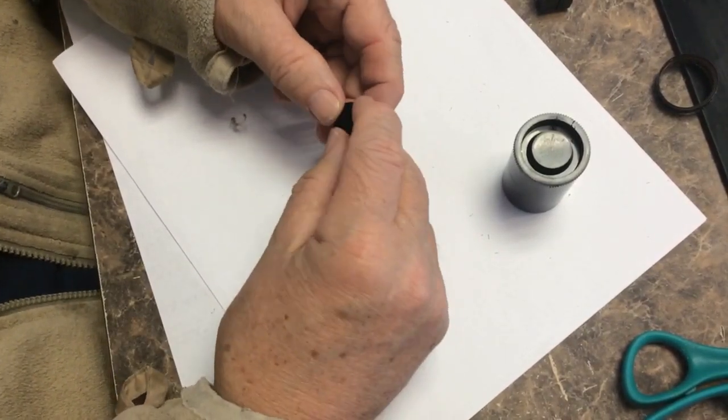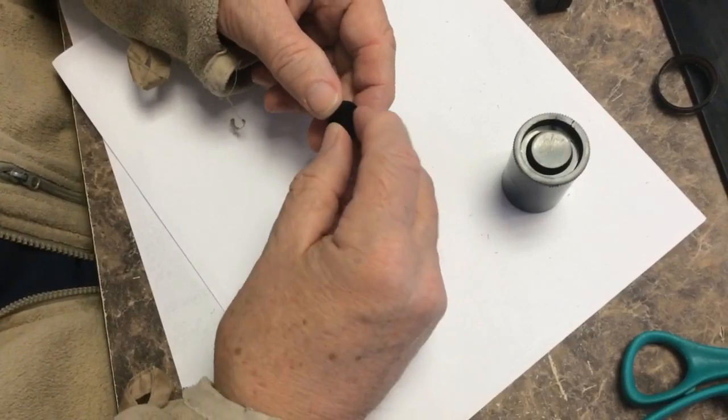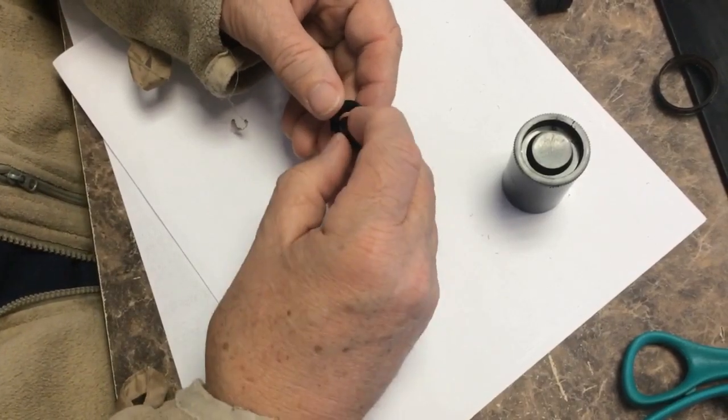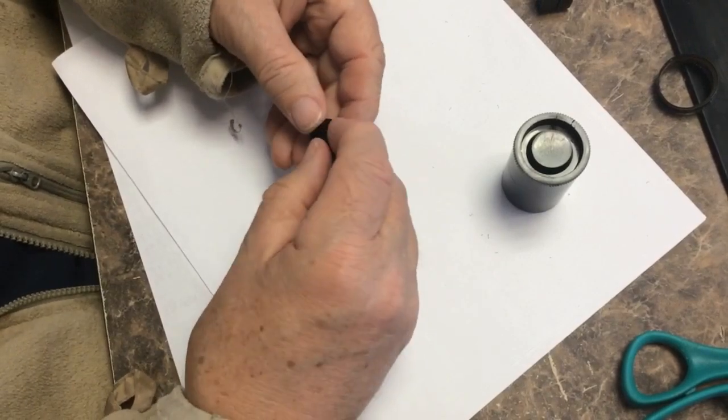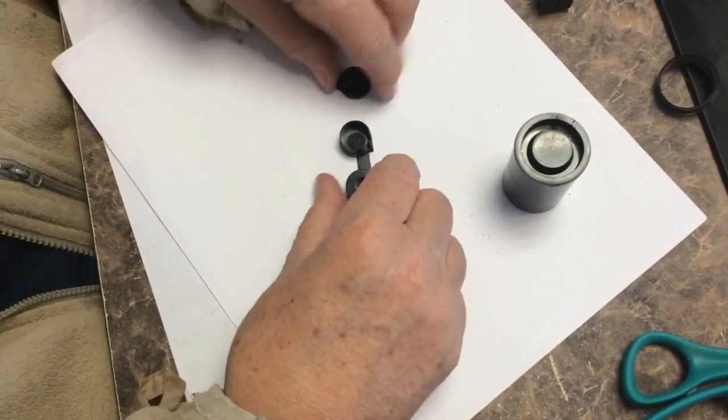The take-up side has a spool in it that is removable. We're going to tape our film to that. It can only go back in one way, which is good, because it needs to go in a certain way so it will interface with the camera.